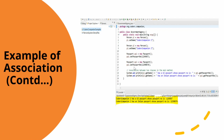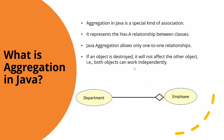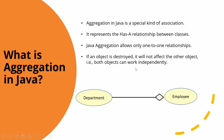The next topic is Aggregation in Java. Aggregation is a special kind of association — it represents the 'has-a' relationship between classes. A very important point to note is that if one object is destroyed, it will not affect the other object; both objects can work independently.